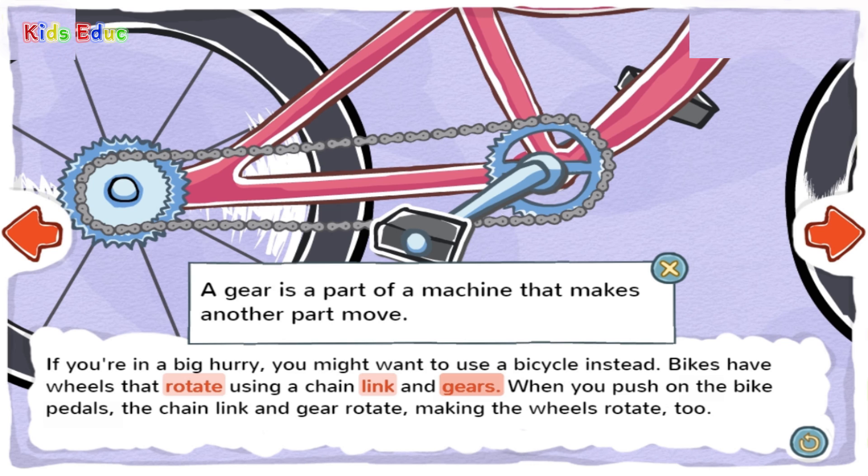Gear: A gear is a part of a machine that makes another part move. A gear has teeth, called grooves, which connect the two moving parts. When one part moves, the gear makes the other part move too.